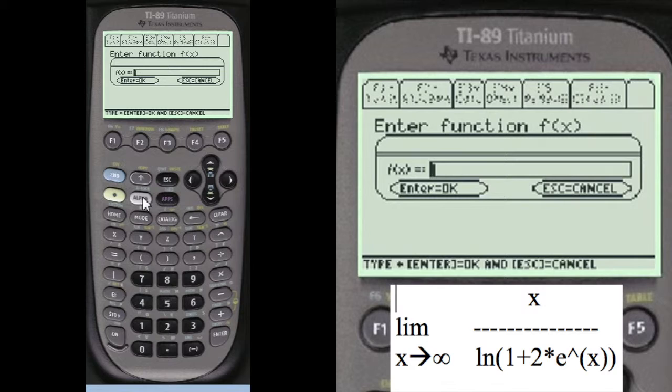Enter our function. Enter alpha before you enter anything into these entry lines here. The problem is alpha x divided by—I always like to put the denominator in parentheses, and then go back one to enter the problem in there.